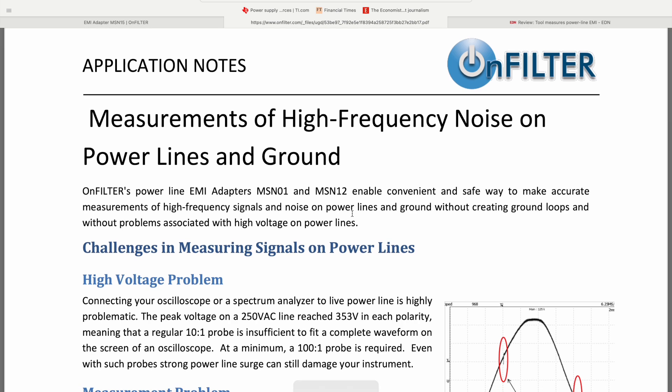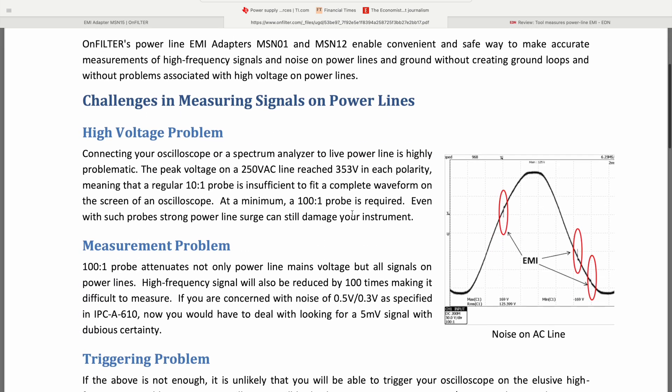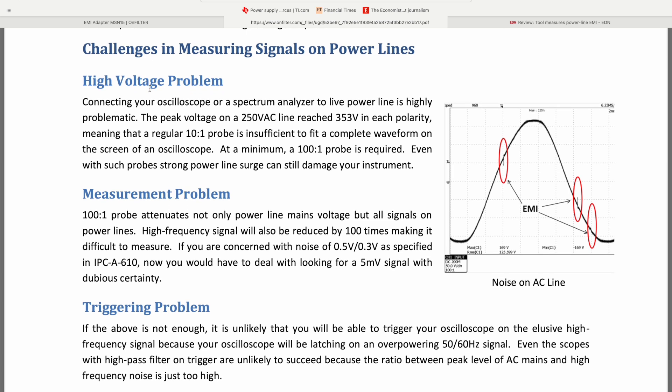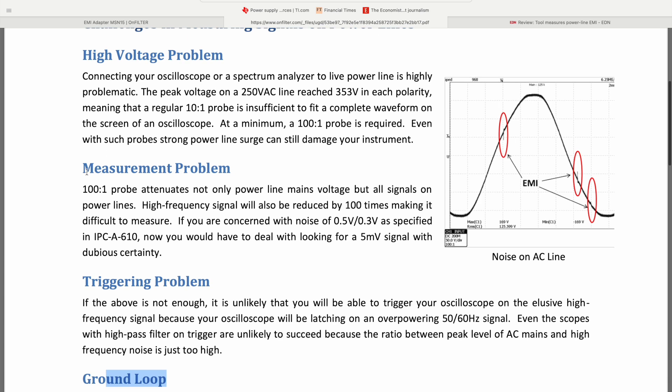So this is the application notes from the manufacturer. If you look at the challenges section, these list the main reasons that we use this tool. For me, the reason I bought this is because first, as mentioned here, the traditional differential probe that comes with the oscilloscope does, let's say, 100 to 1 or 500 to 1 attenuation. But that applies to both the useful signals and noise. So that means if I wanted to look at the noise, it has been heavily attenuated.